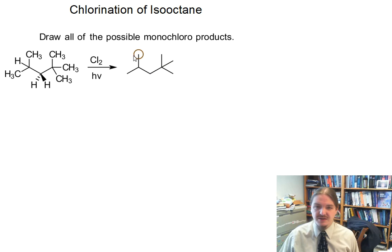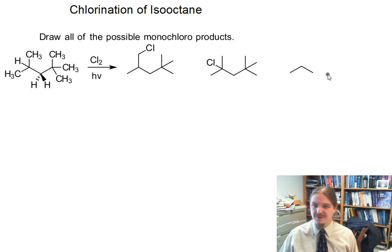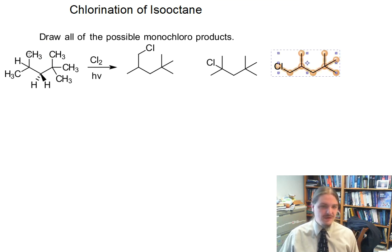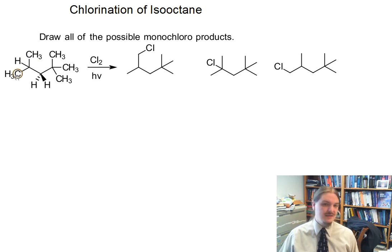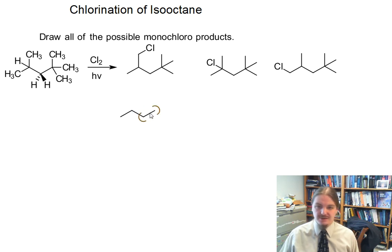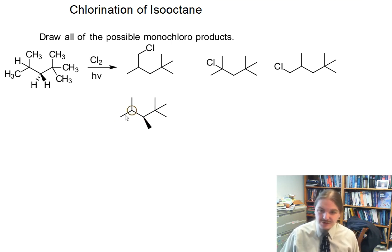I'm not going to represent any of the extraneous hydrogens on the product side — I'm just going to keep the carbons and the chlorine. The first three products I've drawn: one is by halogenating at this primary position, one is by replacing this tertiary hydrogen, and one is by replacing the hydrogen at this methyl group. Now we're going to move in towards the middle. Notice that in none of these are we getting a rearrangement of the hydrocarbon skeleton.